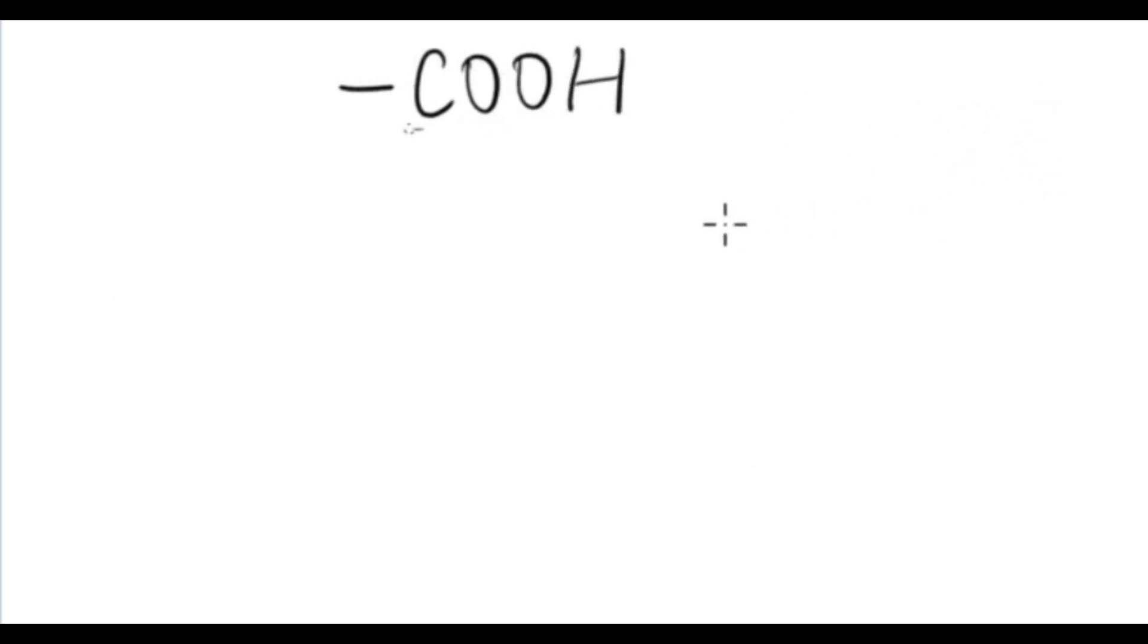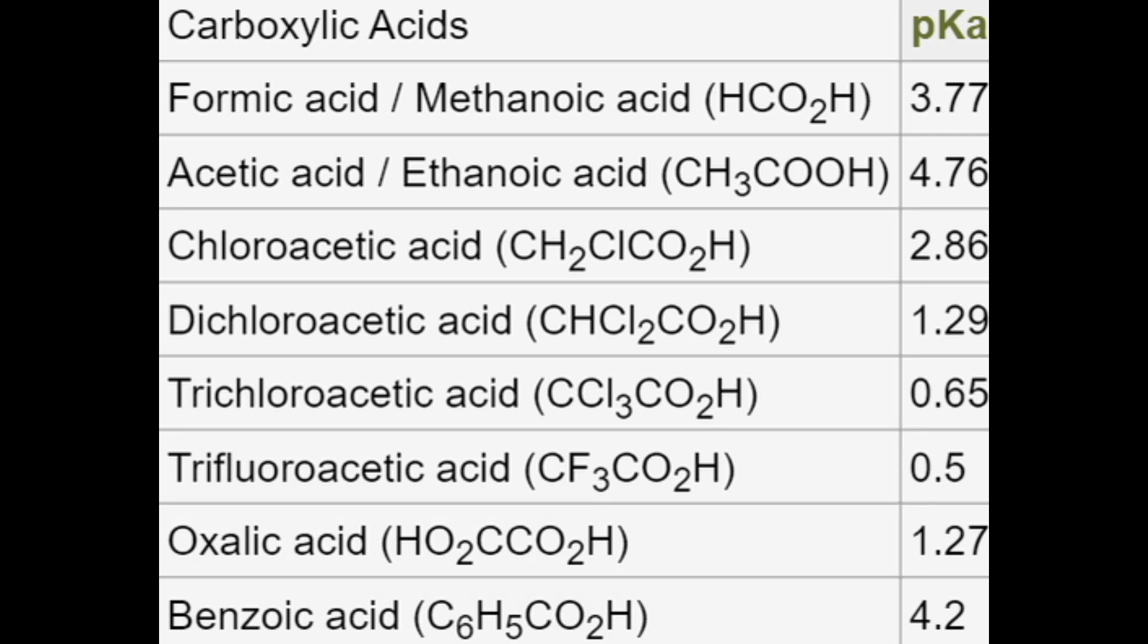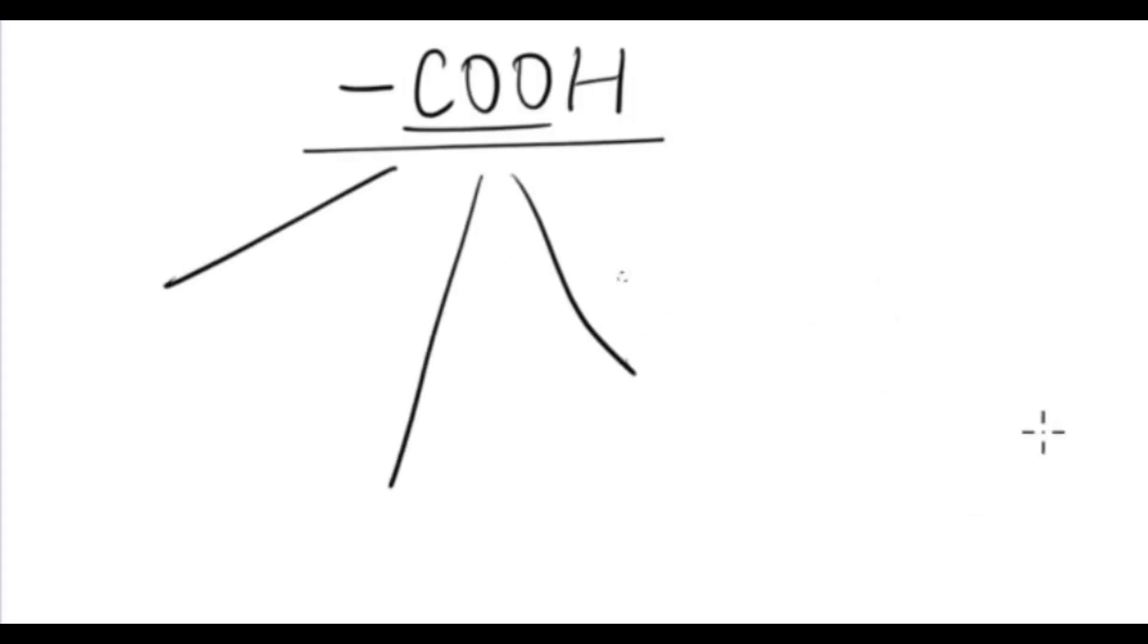Starting with carboxylic acids, you remember the functional group was C double bond O and OH. So it has the carbonyl group and the hydroxyl group. Because of this, it is able to form intermolecular hydrogen bonds. Speaking about the acidity of carboxylic acids, they're very weak acids compared to mineral acids. Obviously, addition of an electronegative atom like chlorine or bromine is going to increase the acidity. And benzoic acid is more acidic than the long chain ones because it is delocalized.